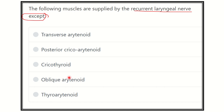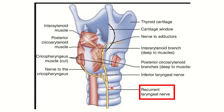The recurrent laryngeal nerve is a branch of the vagus nerve. The vagus nerve terminally gives two important branches: the superior laryngeal nerve and the recurrent laryngeal nerve. The recurrent laryngeal nerve ascends and enters the larynx along its lateral and posterior part.